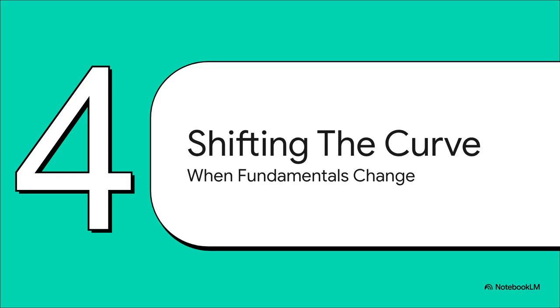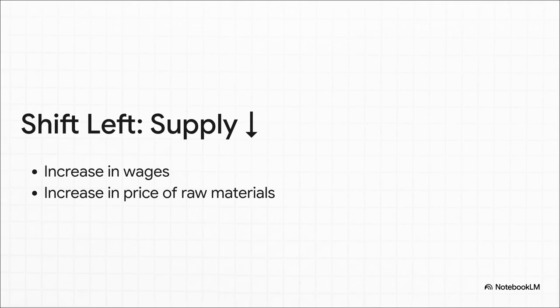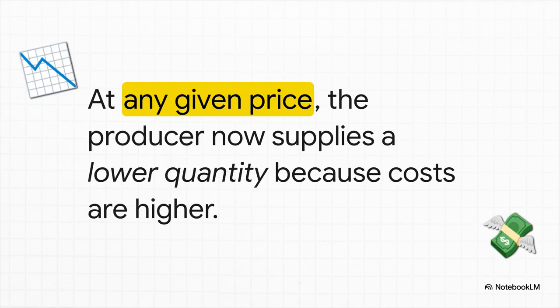But what happens when it's not the market price that changes, but the actual cost of doing business? That's when we don't just move along the curve — the whole curve itself picks up and moves. Imagine the price of fertilizer doubles overnight, or maybe a new law means you have to pay all your workers more. Now your marginal cost to produce at every single level is higher than it was yesterday. This forces your entire supply curve to shift over to the left, which means a decrease in supply. Even if the market price is still $10, you're not selling 100 tomatoes anymore — your costs are too high. At that same price, you're now going to offer a smaller quantity.